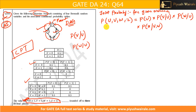So the joint probability formula for this given network is: P(U) × P(V | U) × P(W | U) × P(Z | V, W). Remember, this formula is specific to this network structure — if the diagram changes, the formula will be different. Now we just need to put in the values.